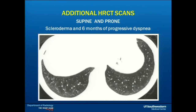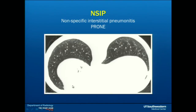I would also like to highlight the importance of additional scans done with high-resolution chest CT. In addition to the supine scan, we also do prone scans and expiratory scans. This patient who had scleroderma and six months of progressive dyspnea got the supine high-resolution scan. One might say these are just dependent ground-glass opacities because the patient did not inspire well — or is this early interstitial thickening? On the prone scan, the ground-glass opacities and thin reticulations persist, allowing diagnosis of early interstitial lung disease.